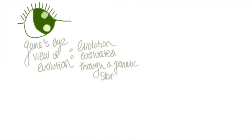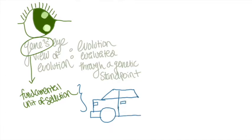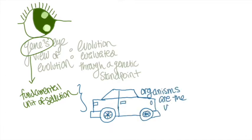The Selfish Gene Theory has also been called the Gene's Eye View of Evolution, in which the effects of evolution are evaluated through a genetic standpoint, and through the impact such changes have on organisms' genomes. This is because Dawkins argued that genes are the primary unit of selection, with organisms simply being the vehicle or means for this process, as they carry this genetic information into future generations.